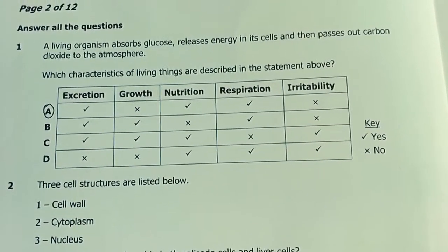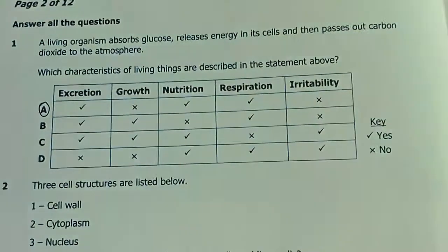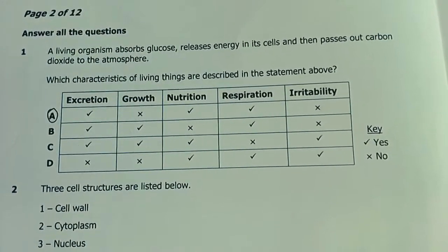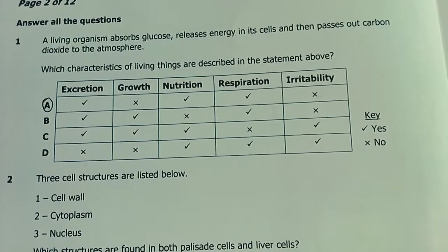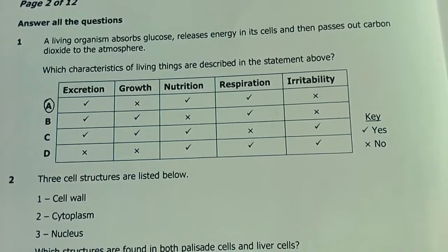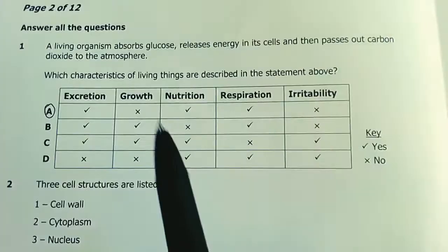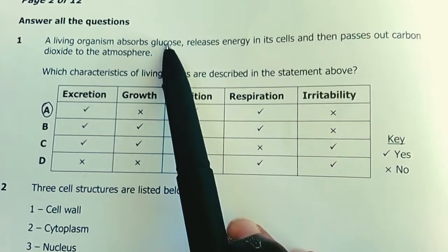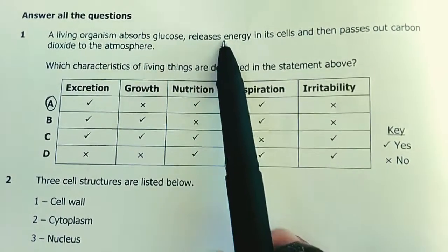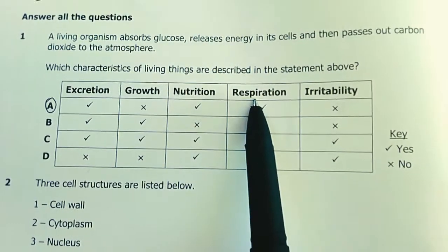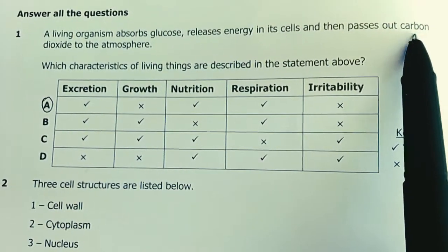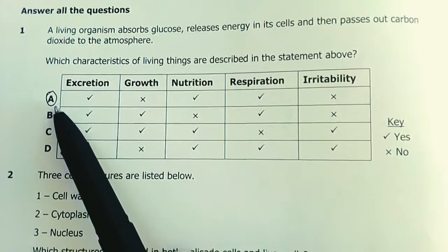A living organism absorbs glucose, releases energy in its cells, and passes out carbon dioxide to the atmosphere. Which characteristics of living things are described? Absorbing glucose is nutrition or feeding. Releases energy is respiration. Passes out carbon dioxide, a waste product, is excretion. My answer is A.